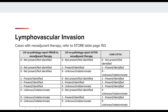For cases with neoadjuvant therapy, you will need to refer to the table on page 153 of the STOR manual. The table should be used to code the LVI data item depending on how the LVI was reported on the pathology report prior to neoadjuvant therapy, which is in the first column, resulting in the code entered into the registry software, which is in the third column. For example, if the pathology report read as present prior to neoadjuvant treatment and then not present or not identified after treatment, you would code the LVI as present. It is important to refer to this table to make sure you are entering the correct code based on the case scenario.